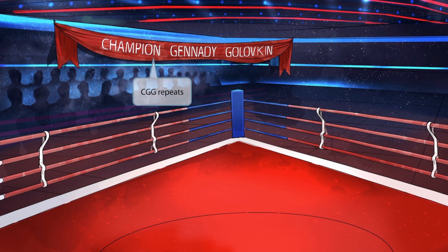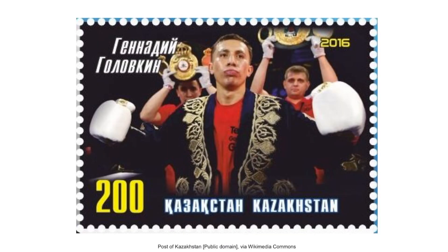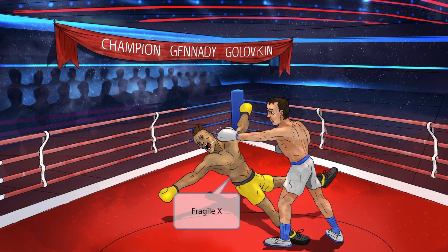If you remember that the champion of this image is Gennady Golovkin, you will remember that CGG repeats cause Fragile X. Just to help reinforce that Gennady Golovkin is an actual person, I've included his image here, and another picture of him. He's such a good boxer that he was even placed on the stamp of Kazakhstan.